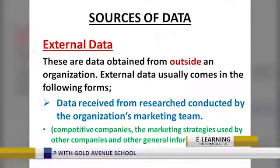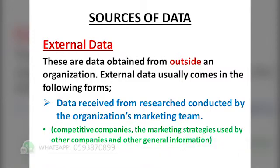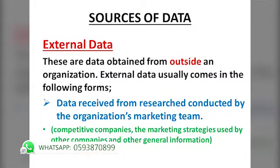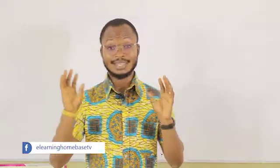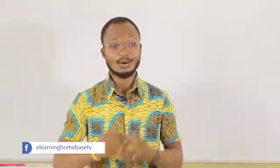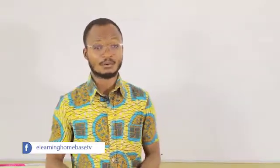Moving on, we will also discuss external data source. These are data obtained from outside an organization. External data usually comes in forms such as a company sending out a group of researchers to go and gather information from a competitor company. The gathered information that comes back to the company is called external data source because it is not coming from the company itself. General information available on the internet, if you research and gather that data, is also referred to as external data source.